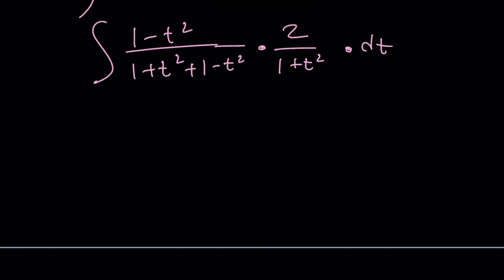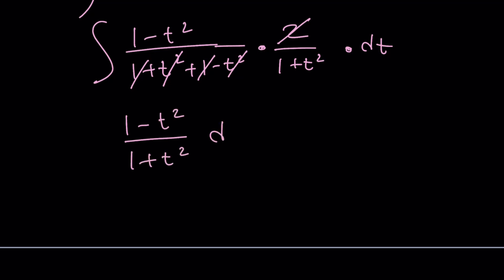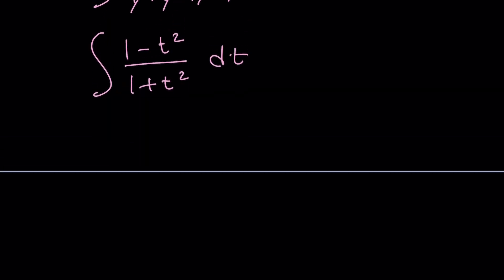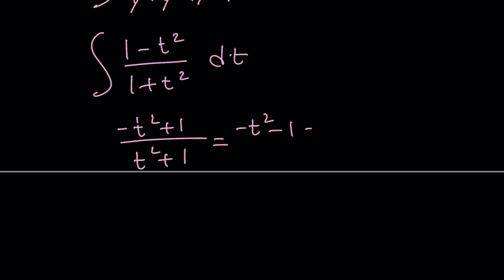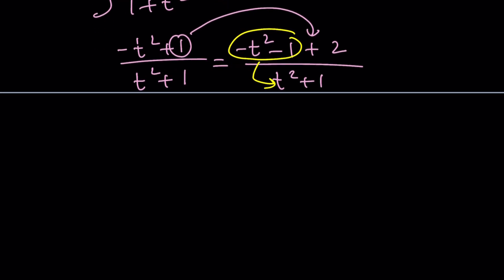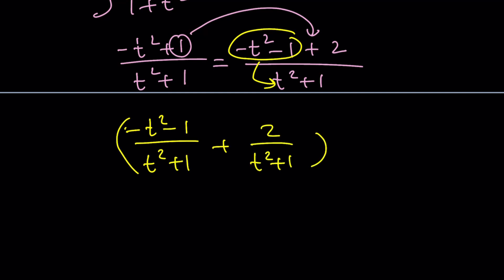Let's simplify. The t squared terms cancel out; 1 plus 1 is 2, and the 2's cancel out, leaving us with the integral of 1 minus t squared divided by 1 plus t squared dt. We can split this up: write negative t squared plus 1 over t squared plus 1 as negative t squared minus 1 plus 2, all over t squared plus 1. That gives negative t squared minus 1 over t squared plus 1 plus 2 over t squared plus 1.